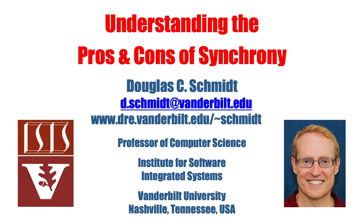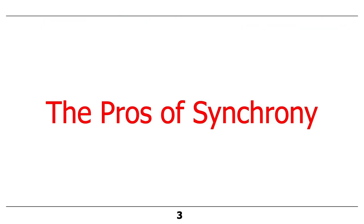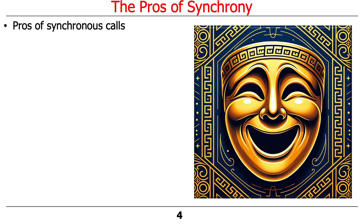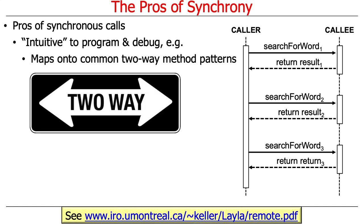Now that you've seen a bit about what synchrony does and how it's used, let's talk about the pros and cons of using synchrony. Starting with the good parts: a synchronous model, a model that uses synchronous processing, is generally intuitive to program and debug. Why? Because you've been doing this your whole life. It also maps on to common two-way method patterns that, again, you've used forever.